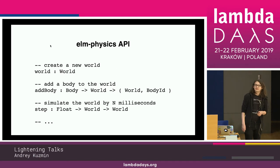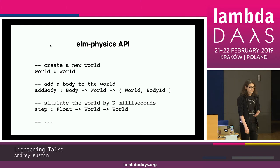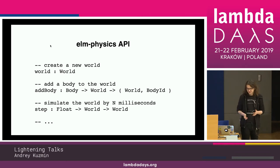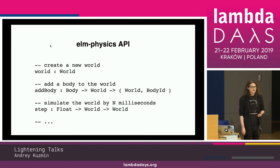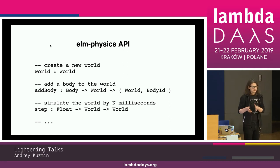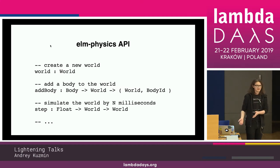This is how the API looks like. You start with a world, you can add bodies to the world, it gives you a new immutable world and an ID of the body that you add. The main magic happens in the step function — a function that takes the milliseconds that passed since the previous frame, takes a current world, and returns you a new immutable world.